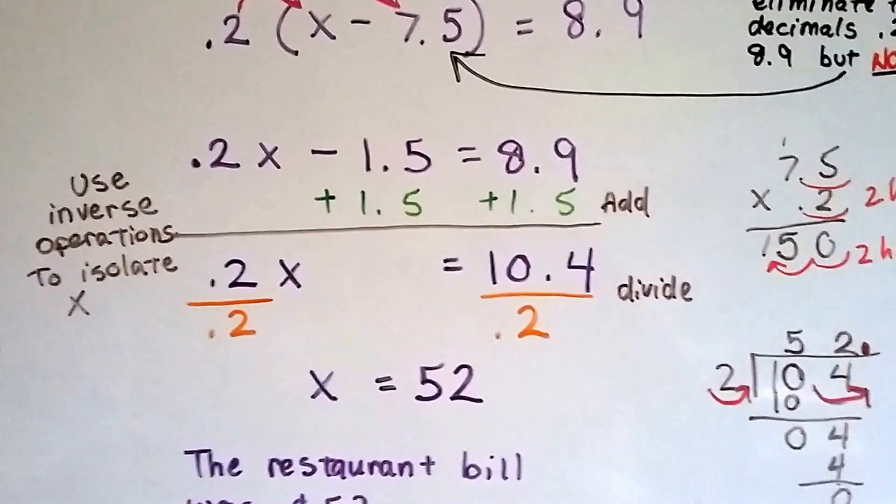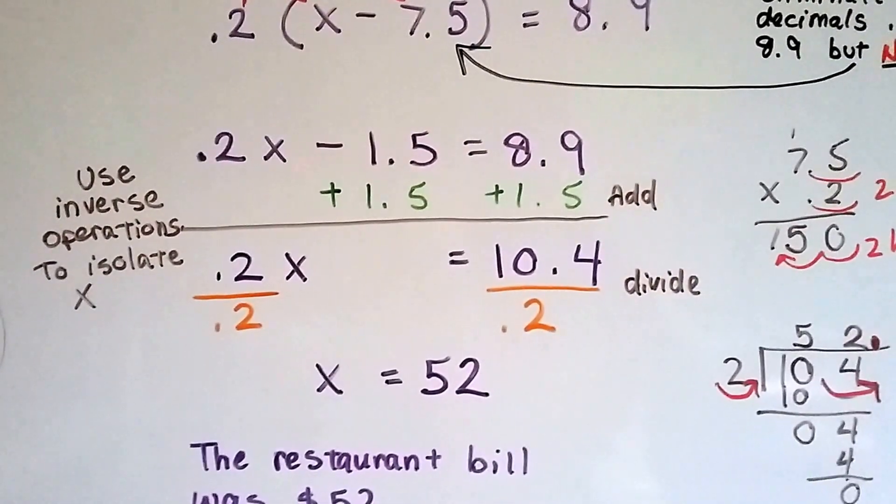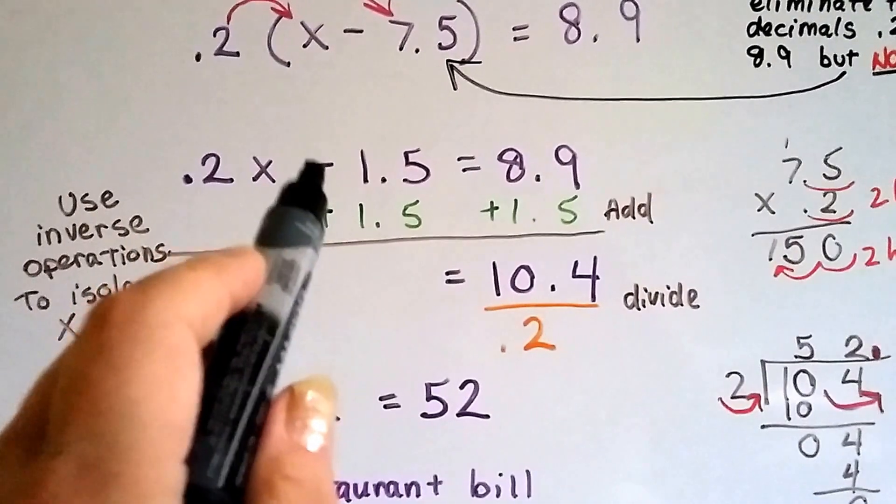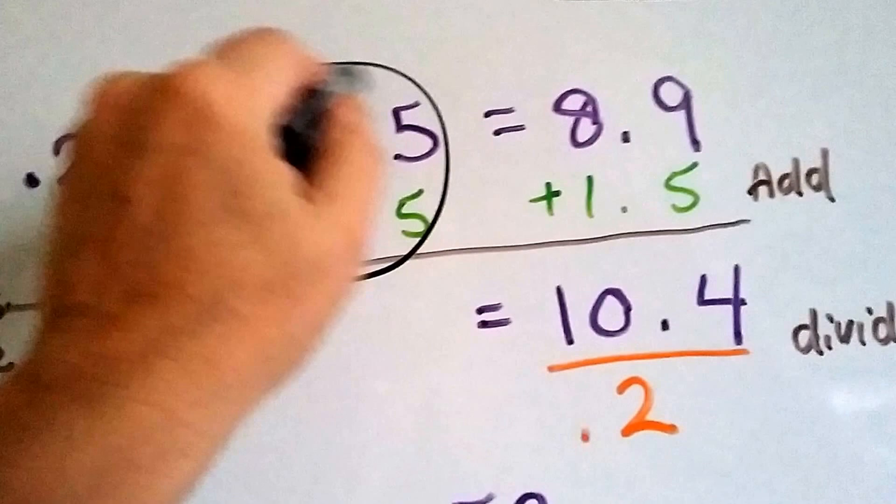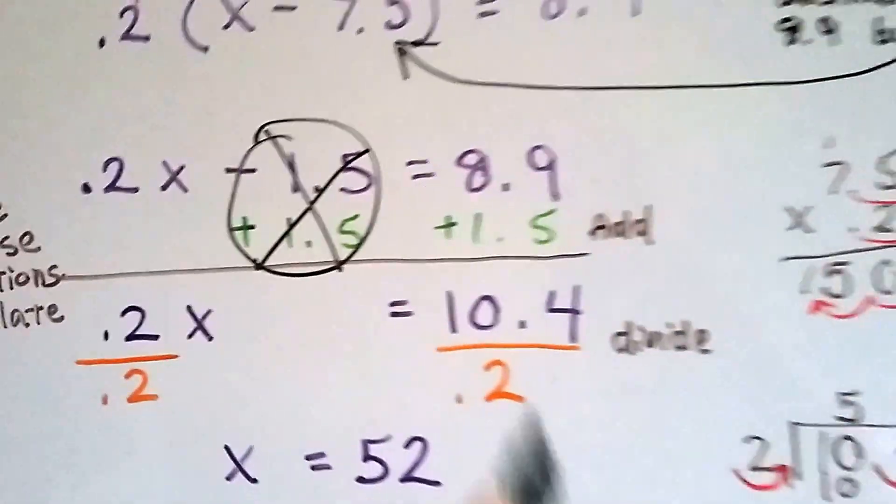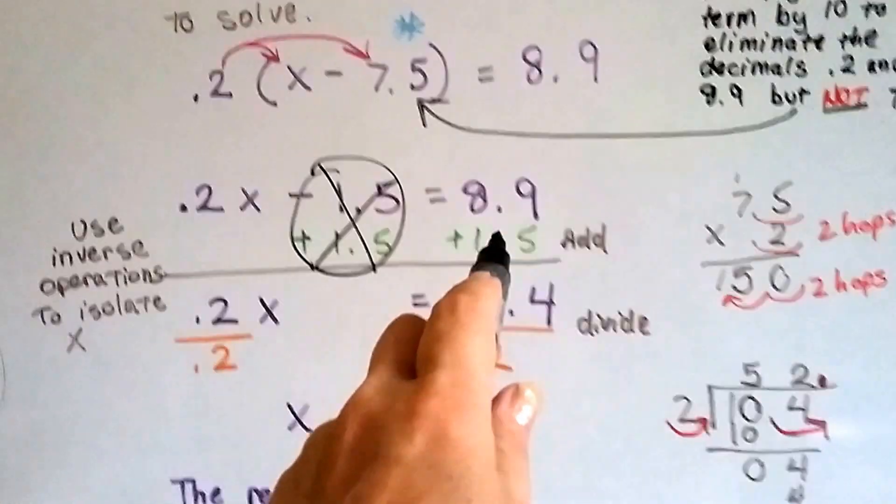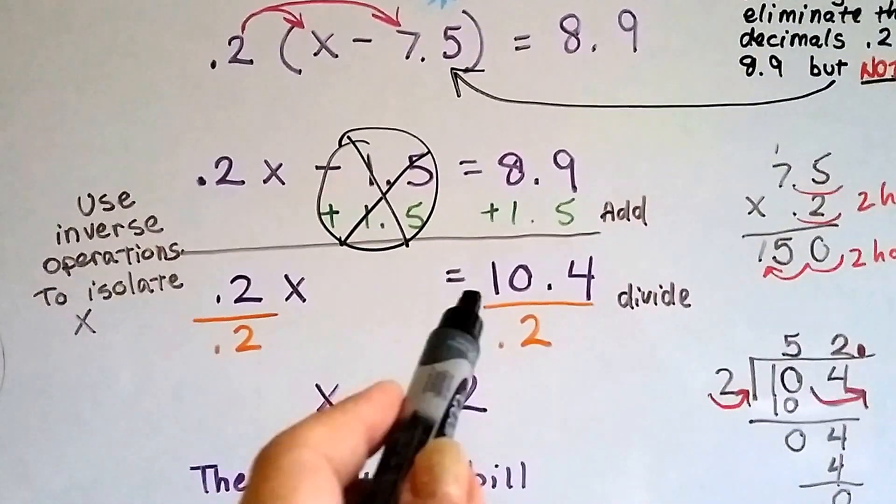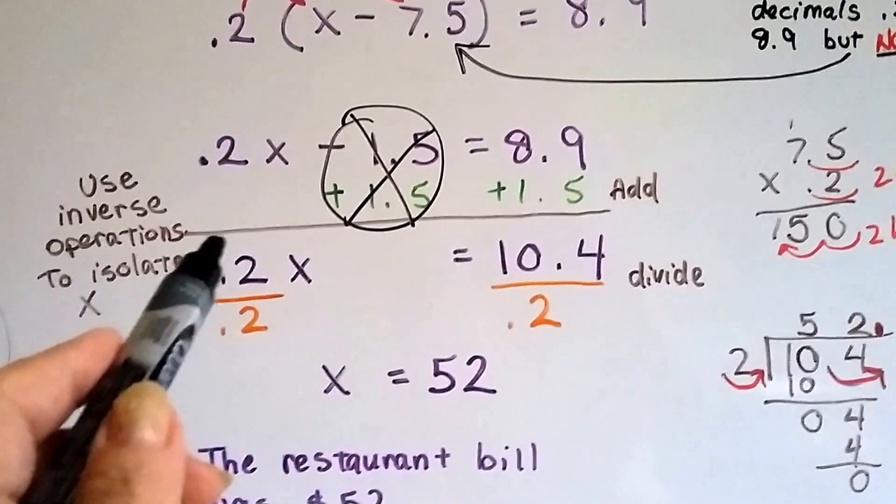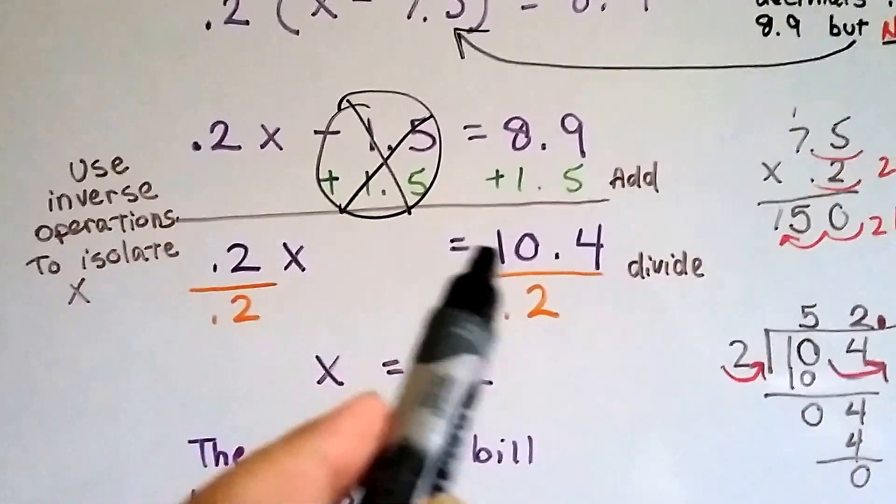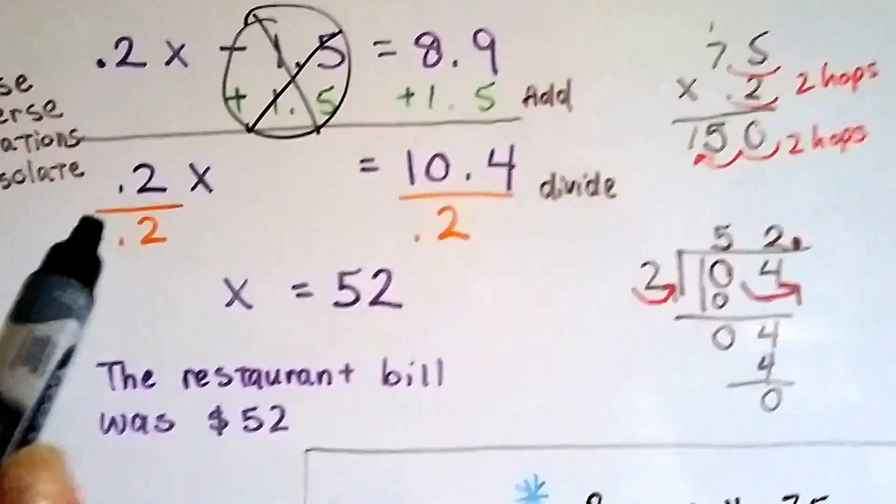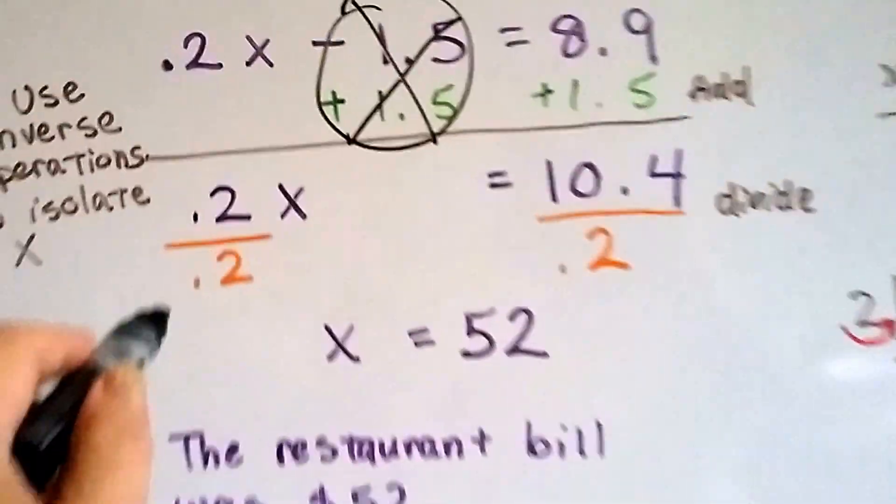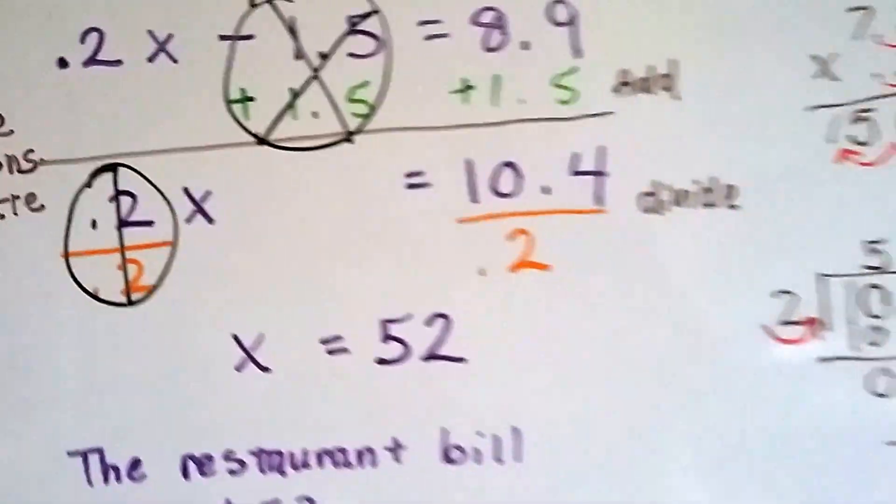Now we can start using inverse operations to isolate X. So because there's a minus 1.5 here, we'll add 1.5 and we'll create a zero pair. And then that'll cancel out. We add 1.5 to this side of the equal sign also. That's going to give us 10.4. Now we've got 0.2X equals 10.4. We have to divide both sides by 0.2. And that'll create our friend, the invisible one here that we always talk about.